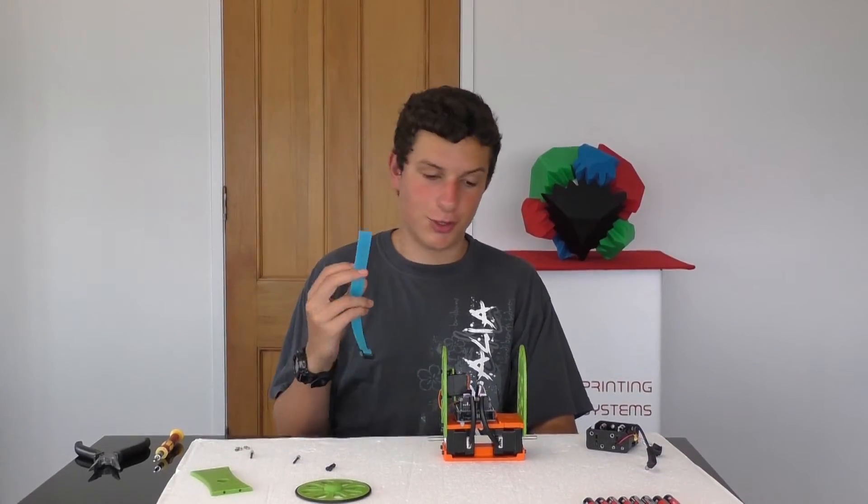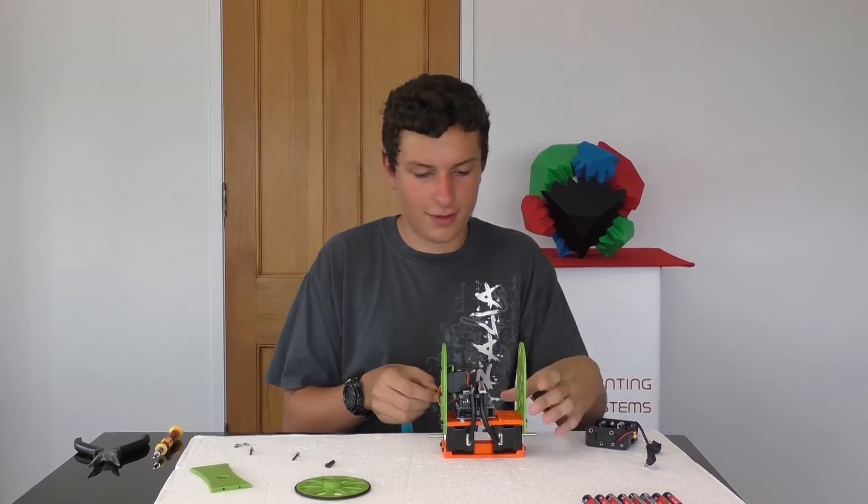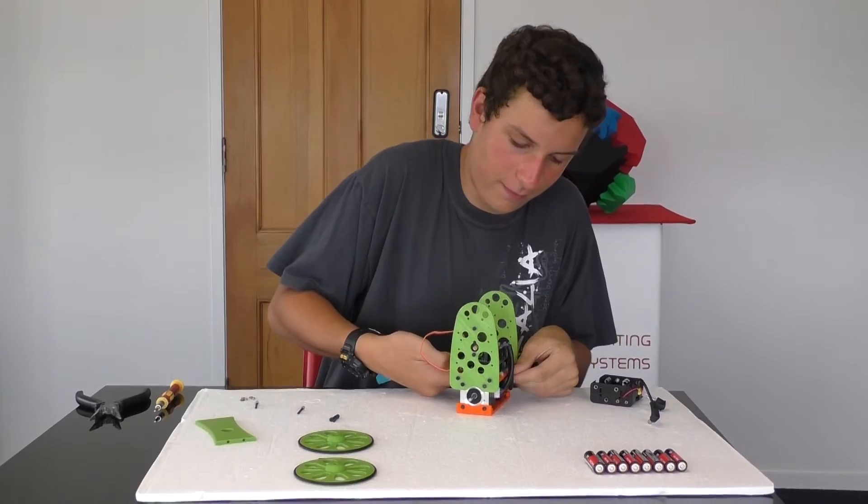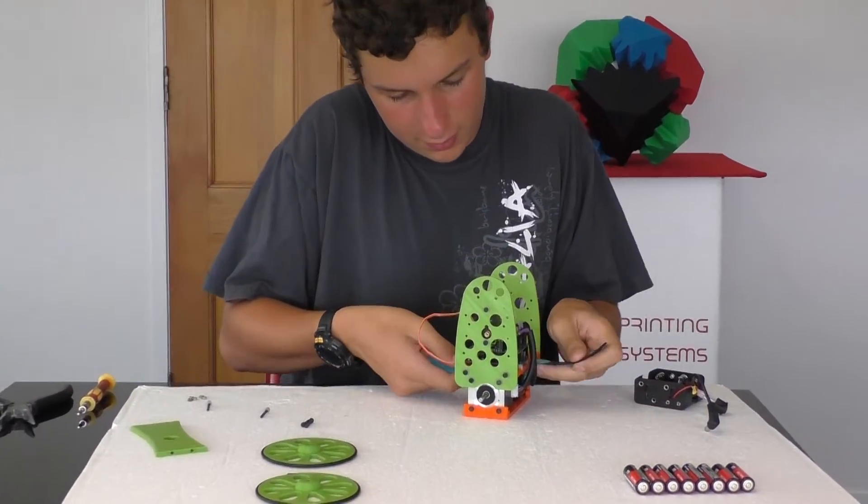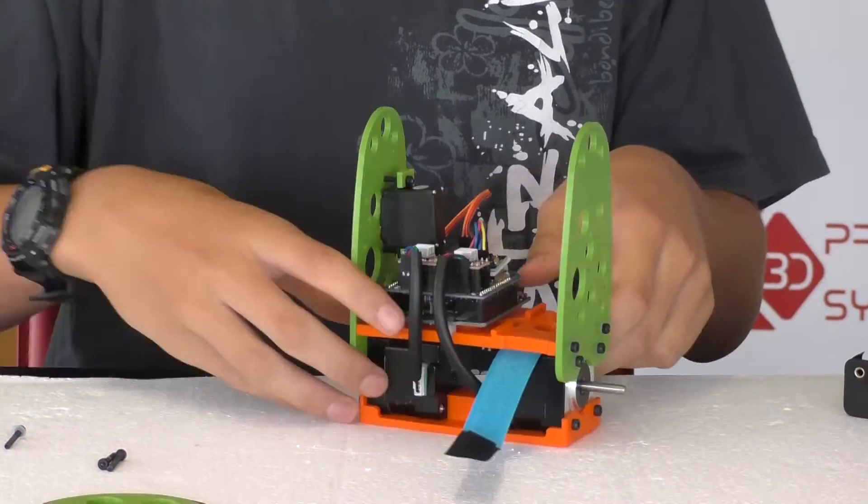Now, we have to put the strap on, which we should have done before we put the second floor on, but I found a way to make it go through. Pull it through, and then wiggle it on top of the motor, so it sits like that.